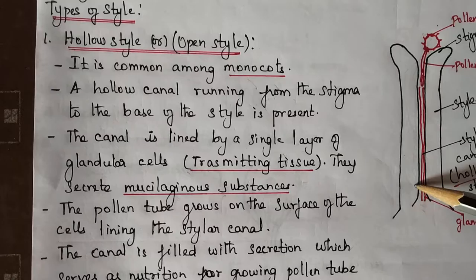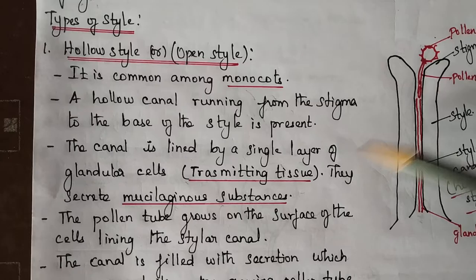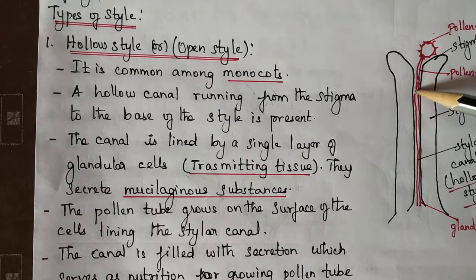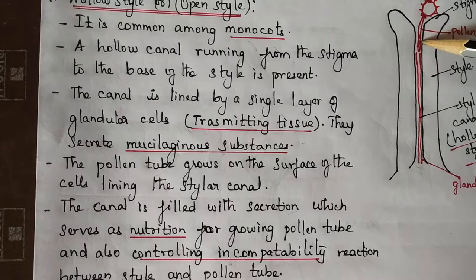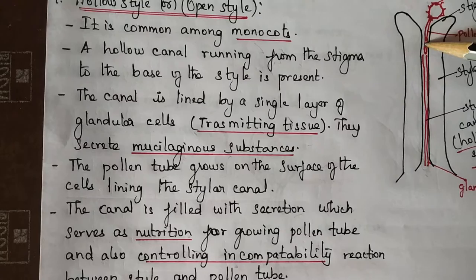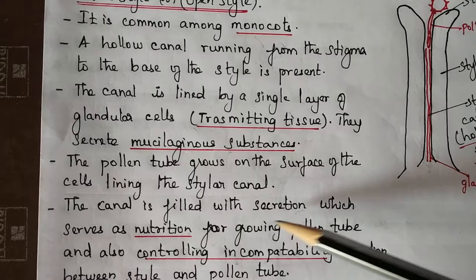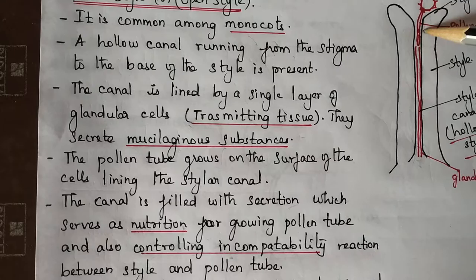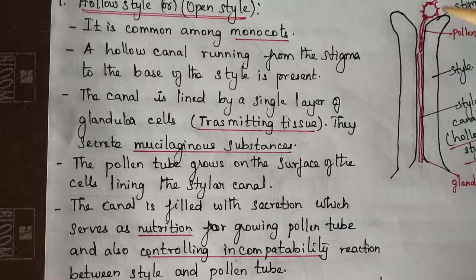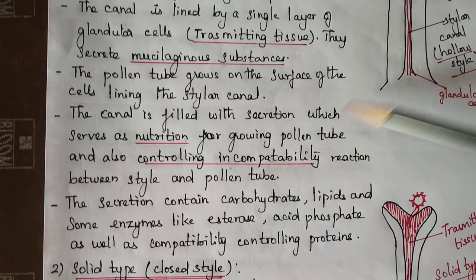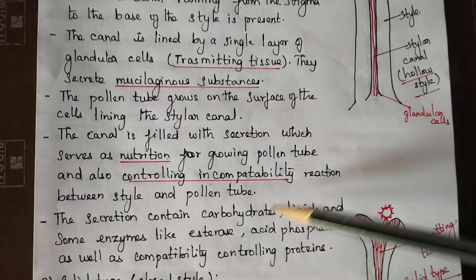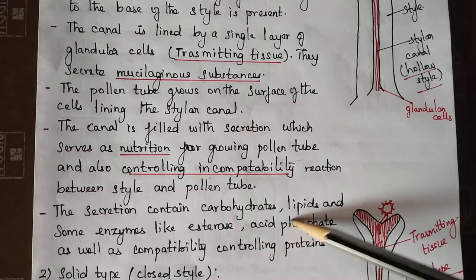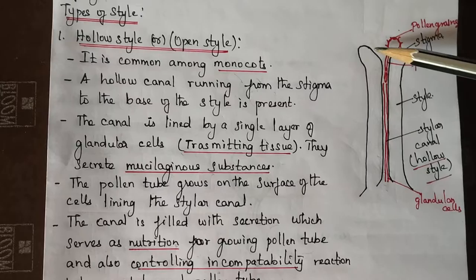The pollen tube grows on the surface of the cell lining the stylar canal. The canal is filled with secretions that serve as nutrition for the growing pollen tube. It also controls incompatibility. The secretion contents include carbohydrates, lipids, and enzymes like esterase and acid phosphate, as well as compatibility-controlling proteins.